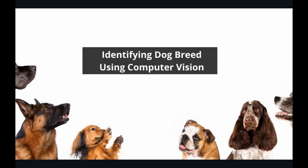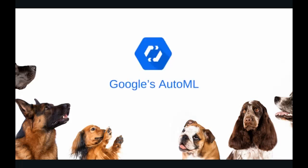In this session we are going to build a computer vision based model to identify the breed of a dog by just using an image of a dog. To develop this model we are going to use Google Cloud AutoML services, which is basically a collection of machine learning products that enable developers with limited machine learning expertise to train high quality models specific to their business needs.